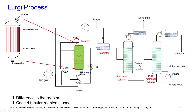The syngas coming out is compressed and some part is purged outside before being sent to the reactor. Once you separate gas from liquid in the gas-liquid separator, the light ends and uncondensed gases are removed. The remaining water plus methanol solution is sent to the pure methanol column, which is a distillation column that separates methanol from water. Methanol is the top product and higher alcohols or water are the bottom product.